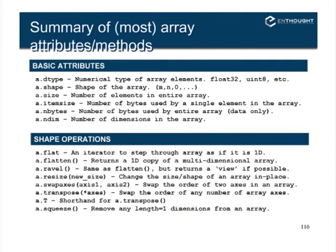Here's a review slide covering basic attributes. The dtype is the type of individual elements in the array. Shape is the dimension along each axis. Size is the total number of elements. Itemsize is the number of bytes in a specific element. Nbytes is the number of bytes in the entire array. And ndim is the number of dimensions — one, two, three, four, whatever it may be.